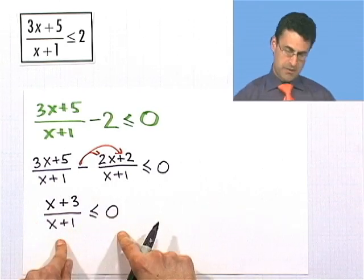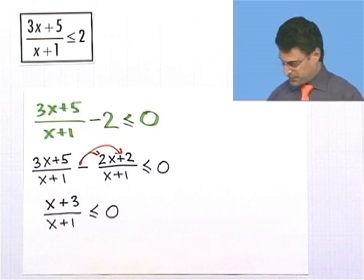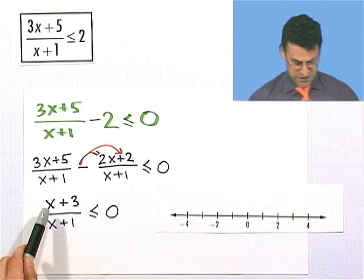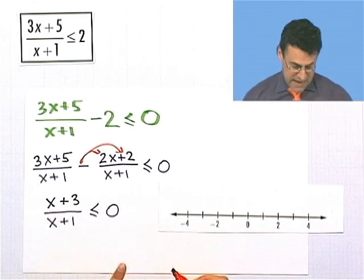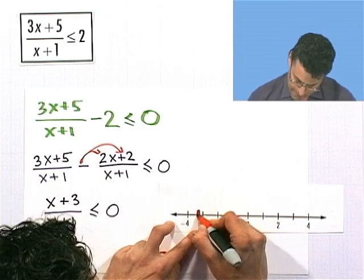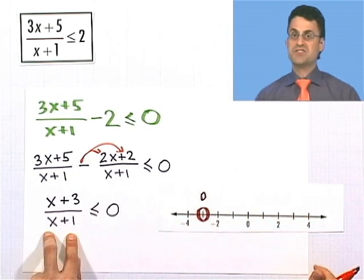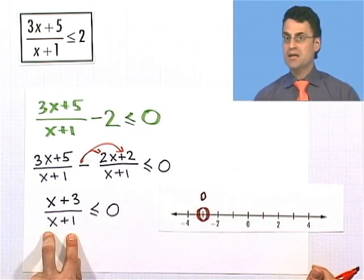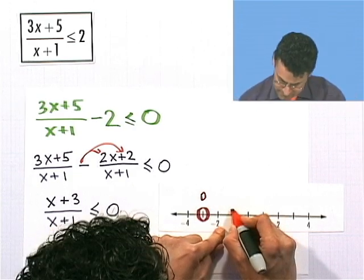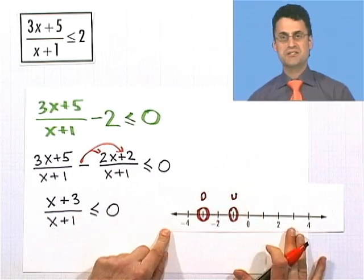So 3x minus 2x is just x, and 5 minus 2 is plus 3, and that's all over x plus 1, and that's less than or equal to 0. Now what are my critical points? They're the places where the numerator equals 0 or where the denominator equals 0. The numerator equals 0 when x plus 3 equals 0, so x equals negative 3 — that's a zero point. And the denominator equals 0 when x plus 1 equals 0, so x equals negative 1 — that's undefined.